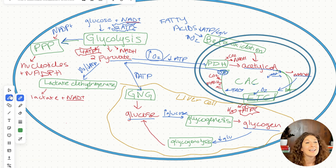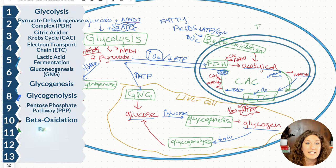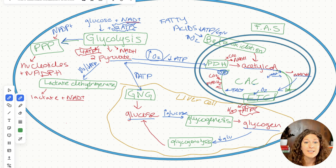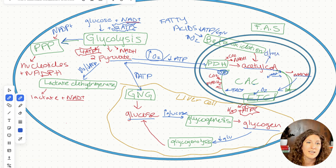Let's say we have plenty of energy to go around and we actually want to store some fats. We have plenty of sugar and plenty of energy. We're going to store it through a pathway called fatty acid synthesis, written as FAS. This happens out in the cytosol. The issue is our acetyl-CoA is in our mitochondria, so the first thing that needs to happen is we shuttle it out via what's known as a citrate shuttle.